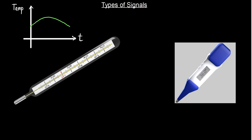So here the time is continuous — it is continuous time. Also the signal is continuous, so we can say it is continuous amplitude. We call it continuous amplitude because within a certain range of temperature values, all sorts of values are available with no gap in between. Any value between two intervals exists in the signal. That's what we call continuous time and continuous amplitude.